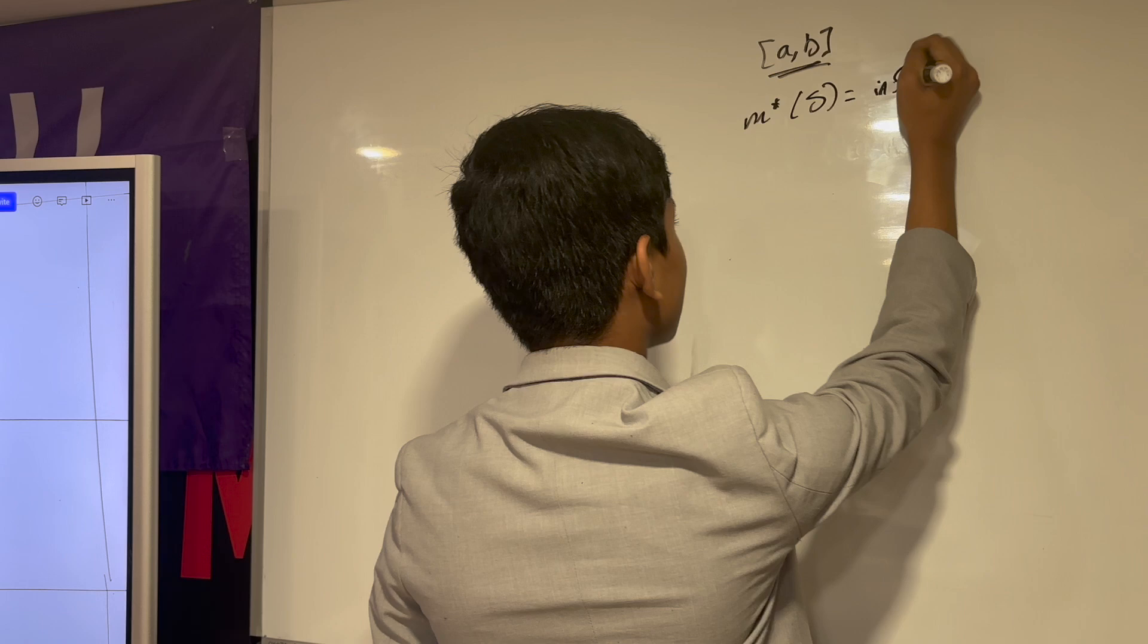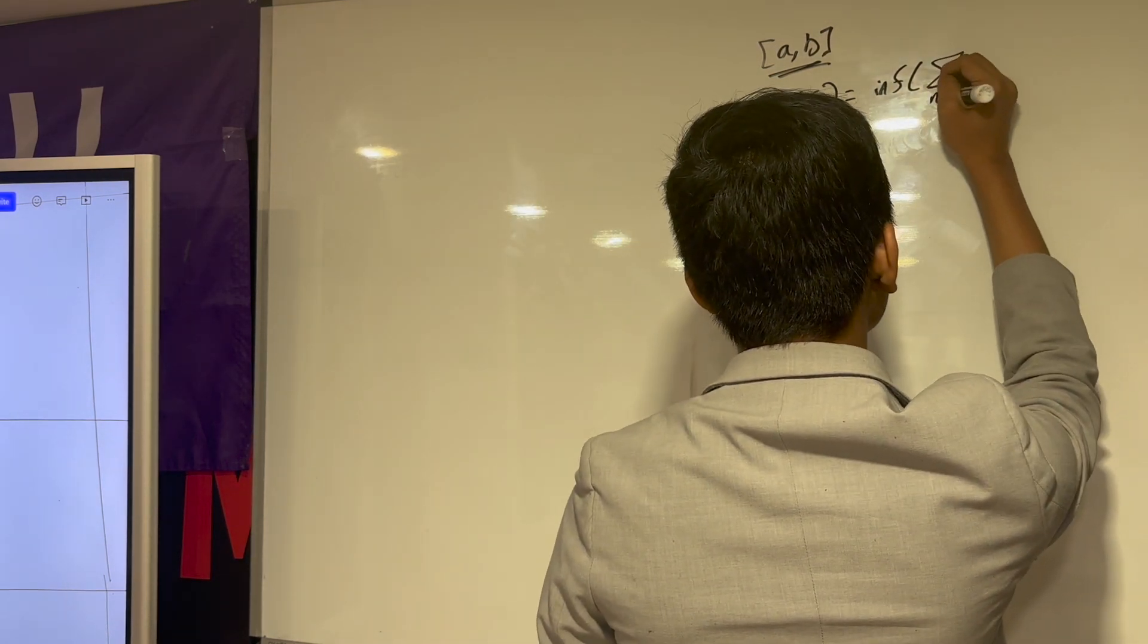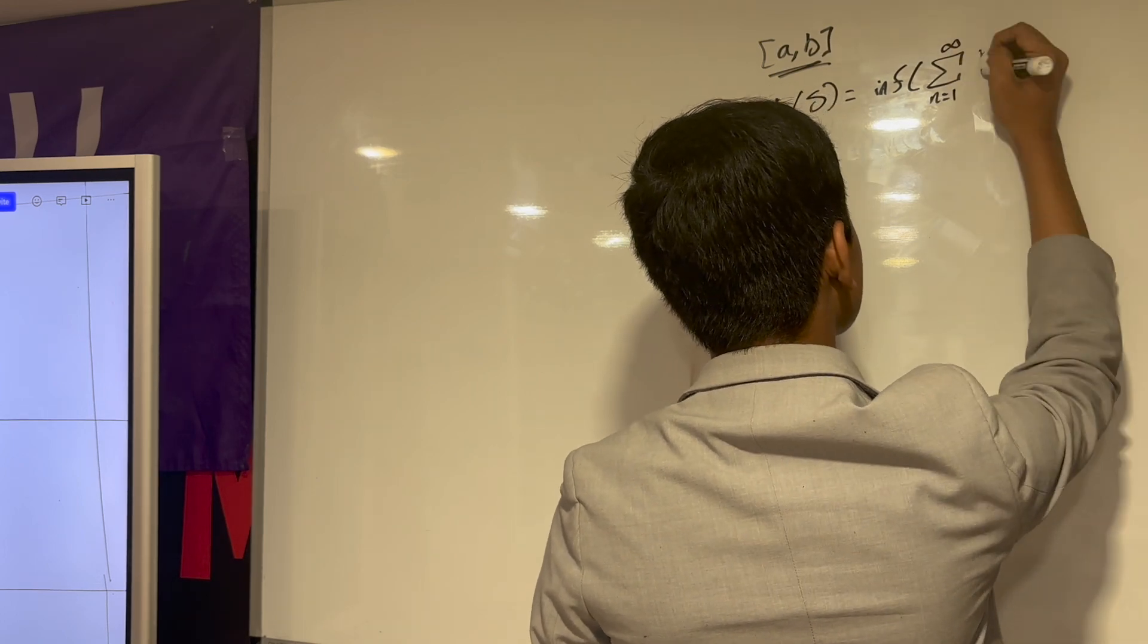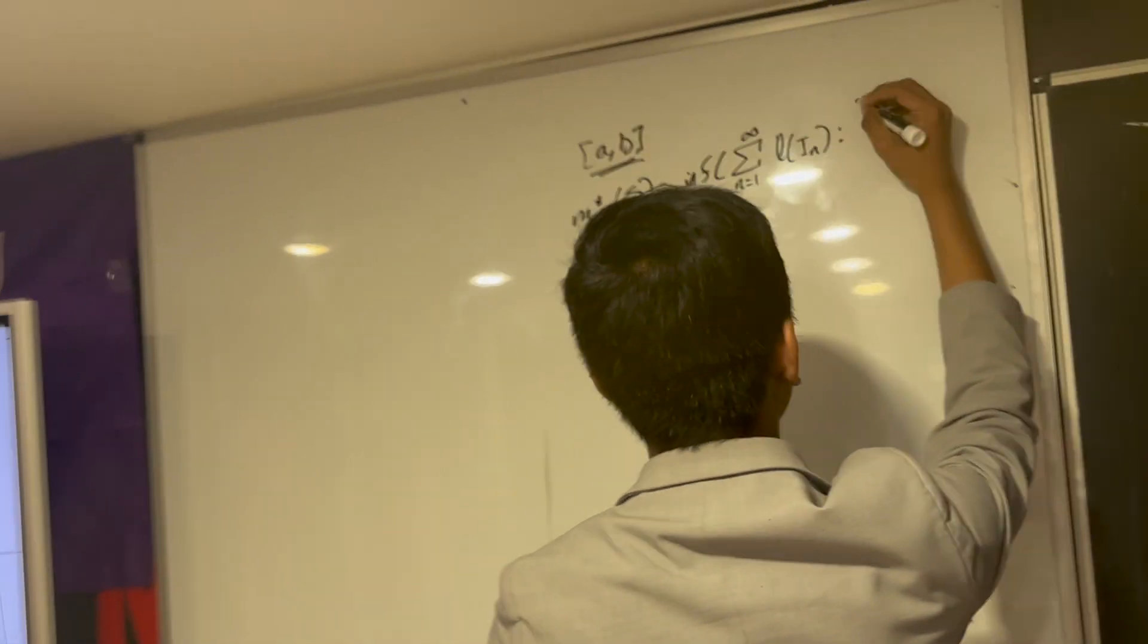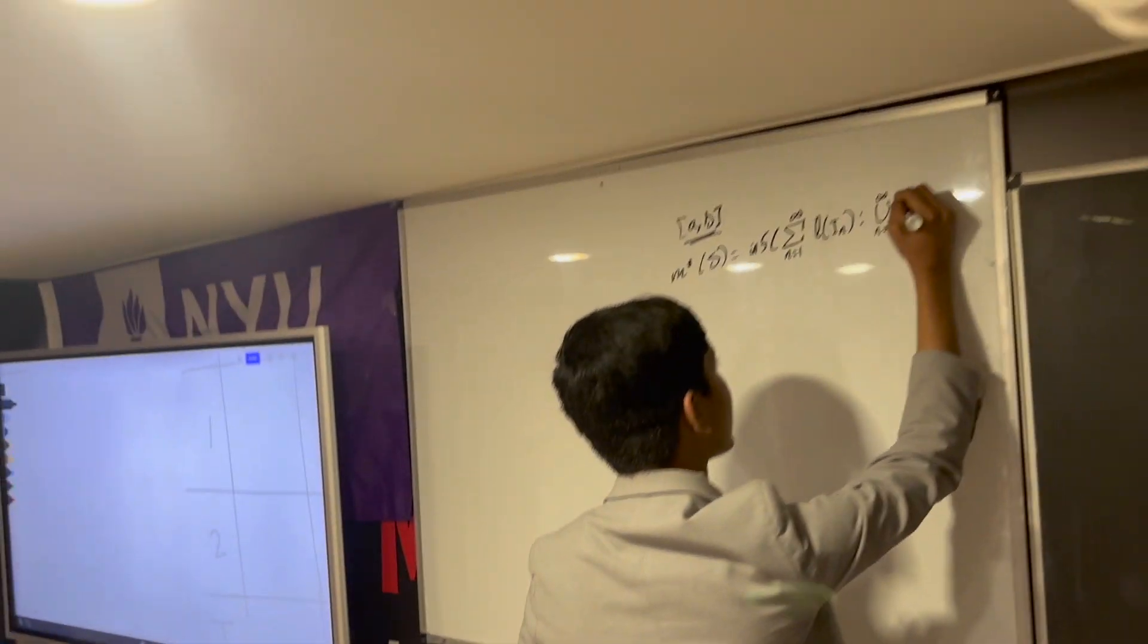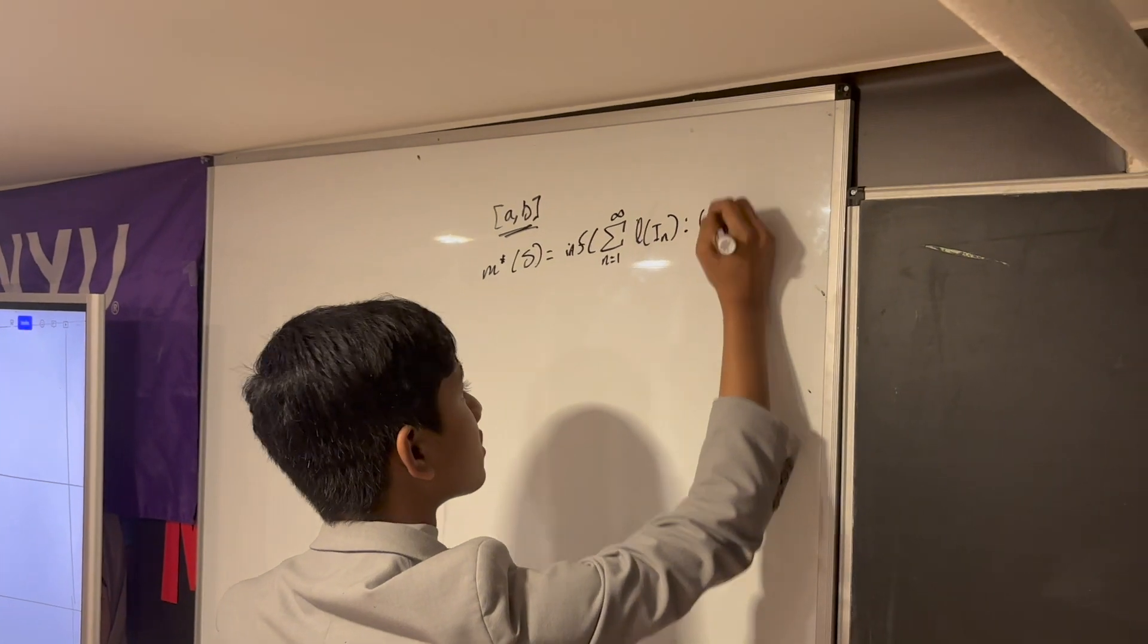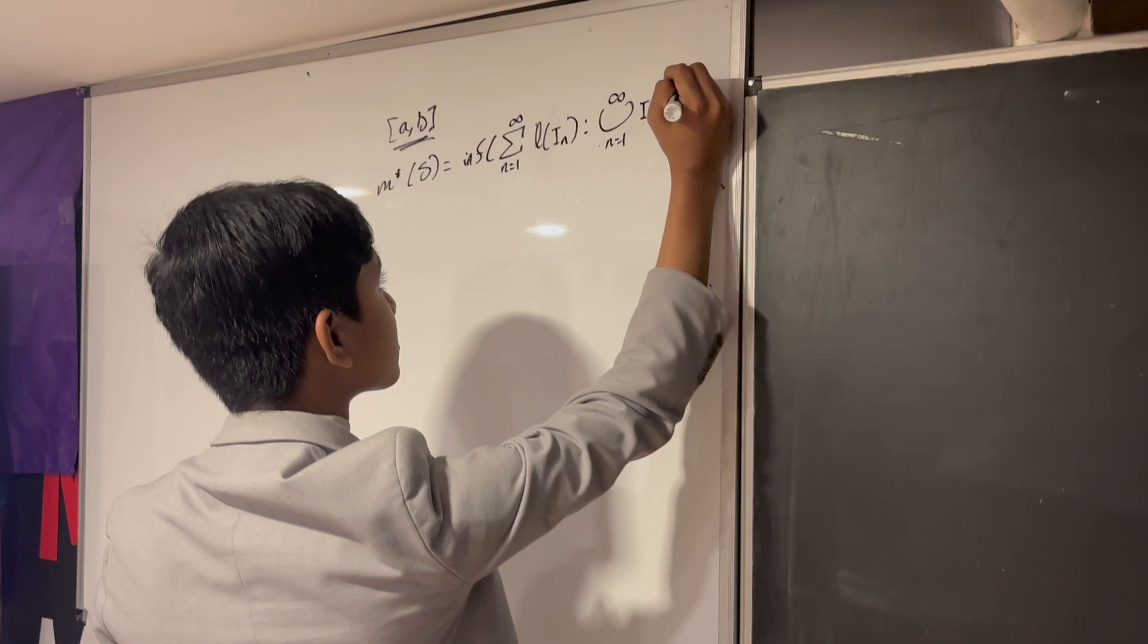Well, it's the infimum of the infinite sum of the lengths of intervals I_n such that the union of all I_n covers—I could have used the superset symbol—the union of all I_n covers S.